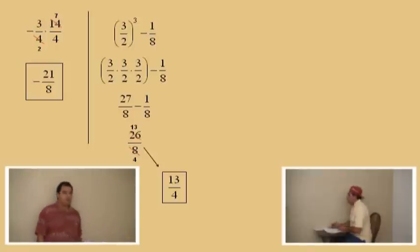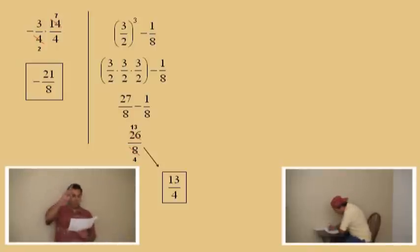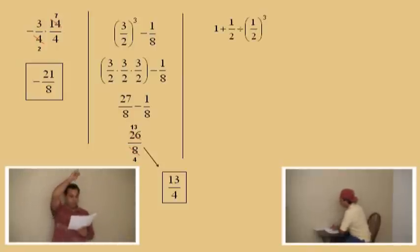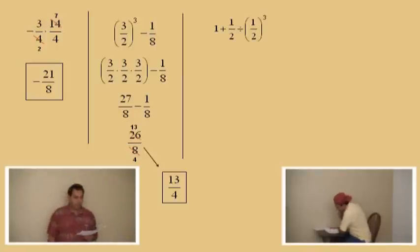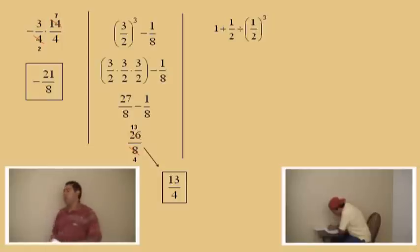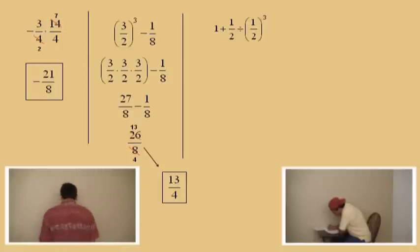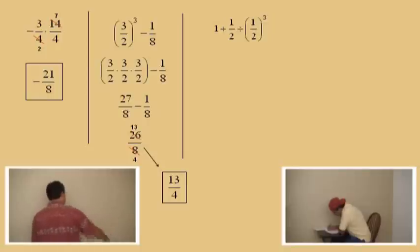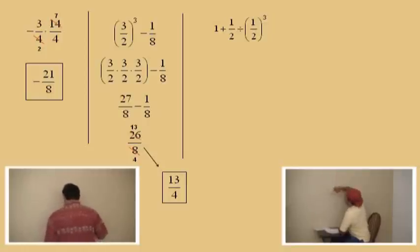Let's go to our next problem. It is 1 plus 1 half divided by 1 half cubed. What do we have to do first? What does our order of operations say? Exponent. We've got to take care of that exponent first.